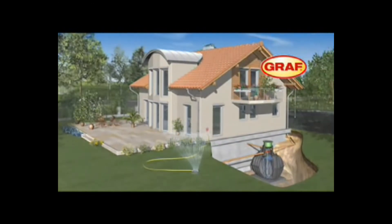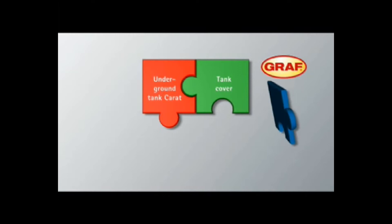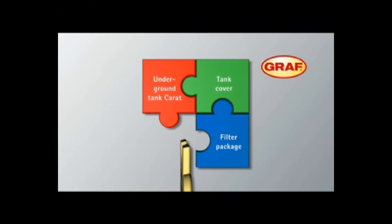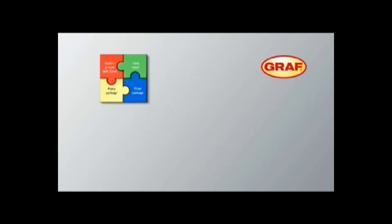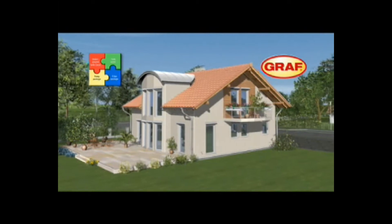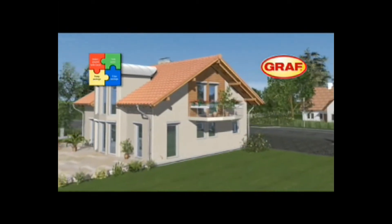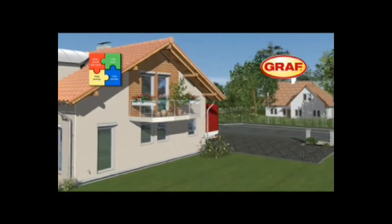GRAF's modular system Karat consists of four main components. The Karat underground tank, a tank access cover which is suitable for pedestrian loading and vehicle loading as an optional extra, the filter package and the pump package. The four components enable you to customize the GRAF modular system to meet your specific requirements. Your GRAF approved retailer will supply all the components required.